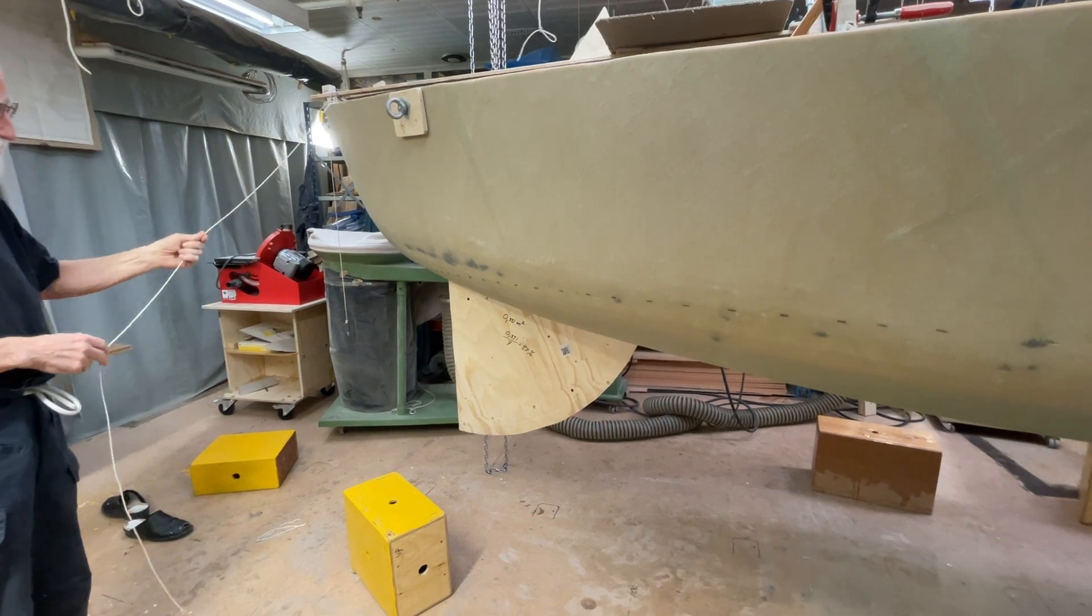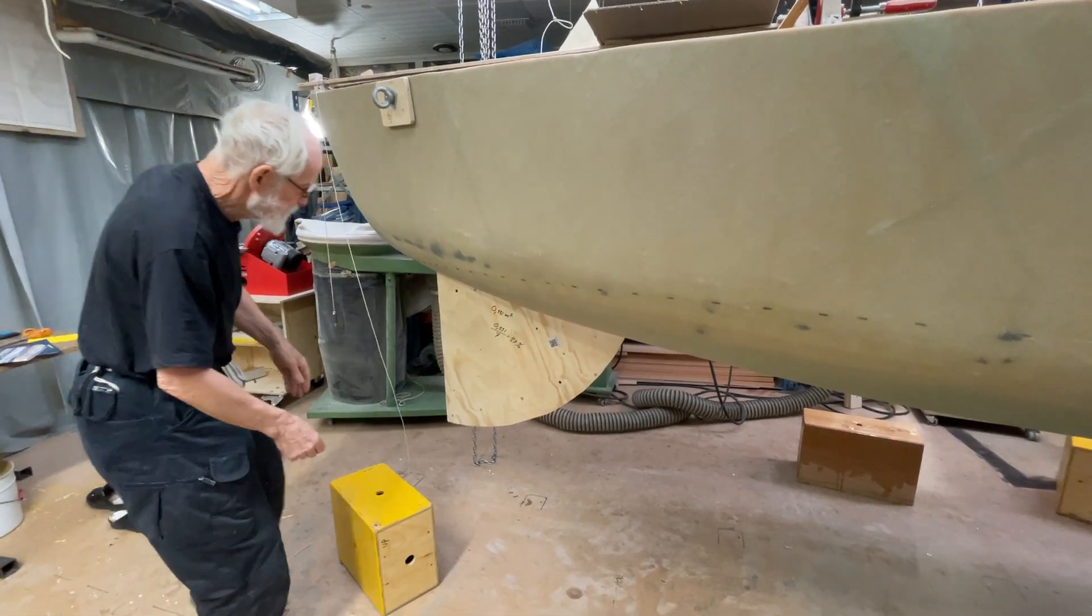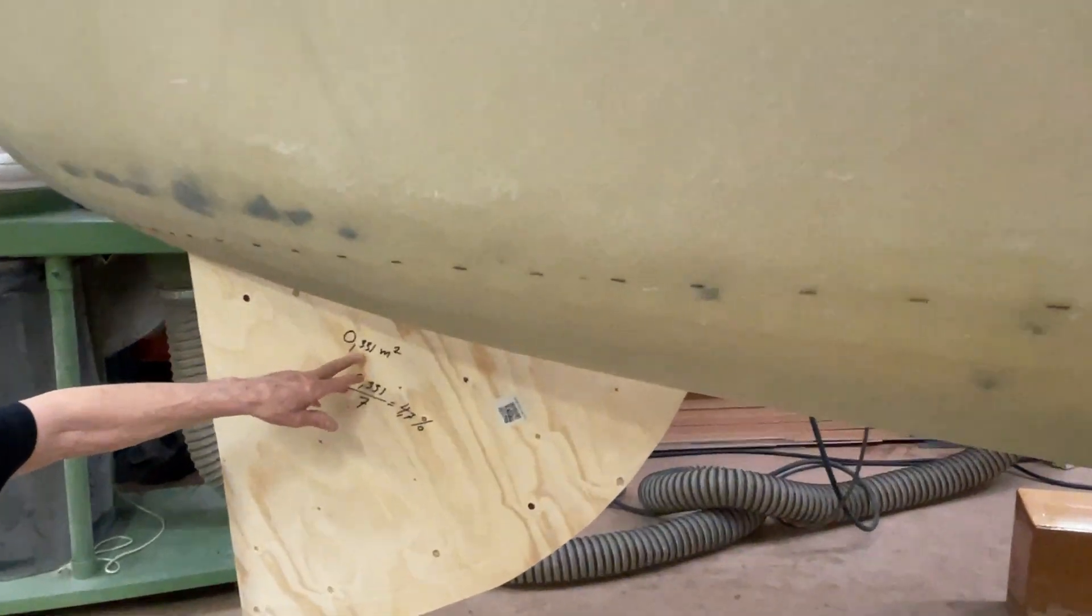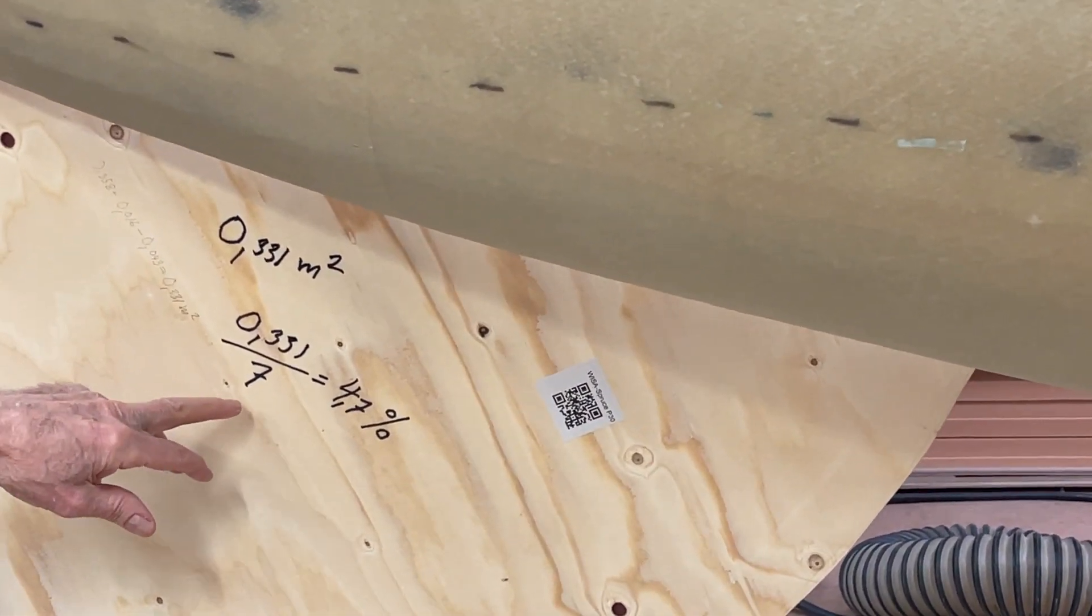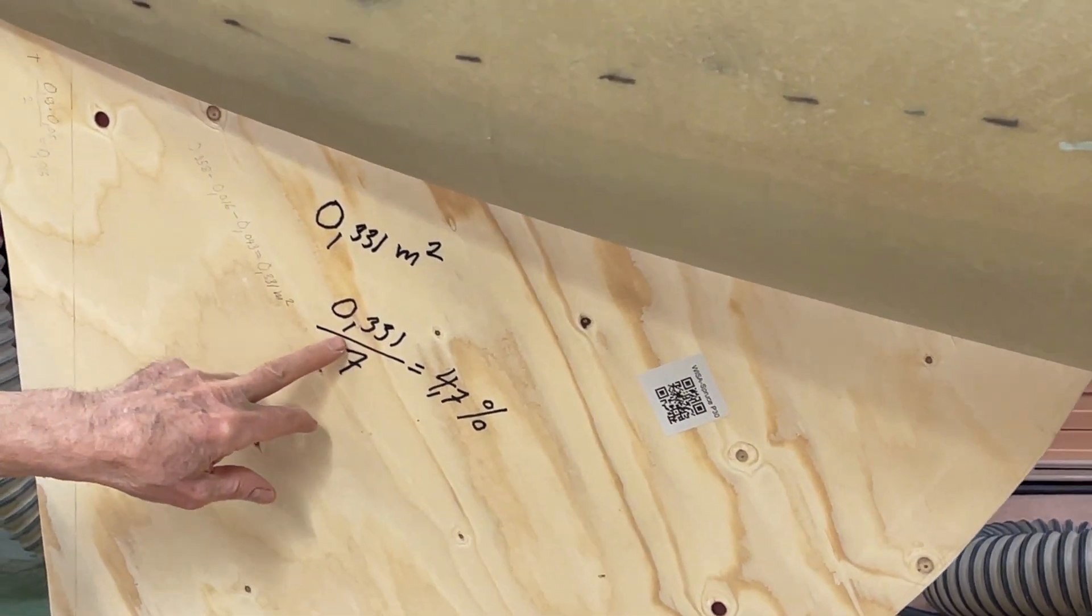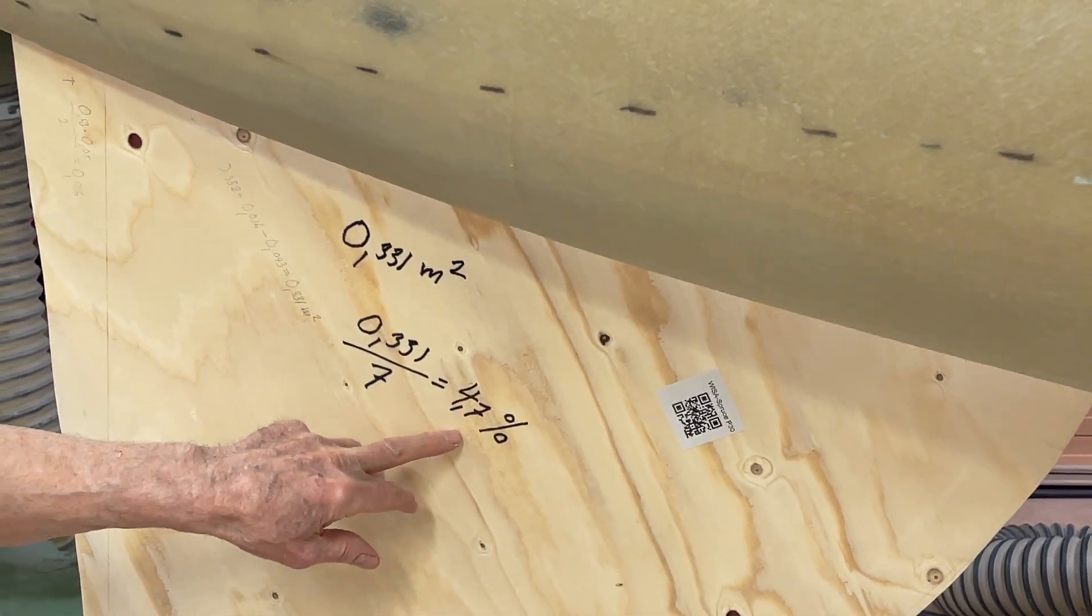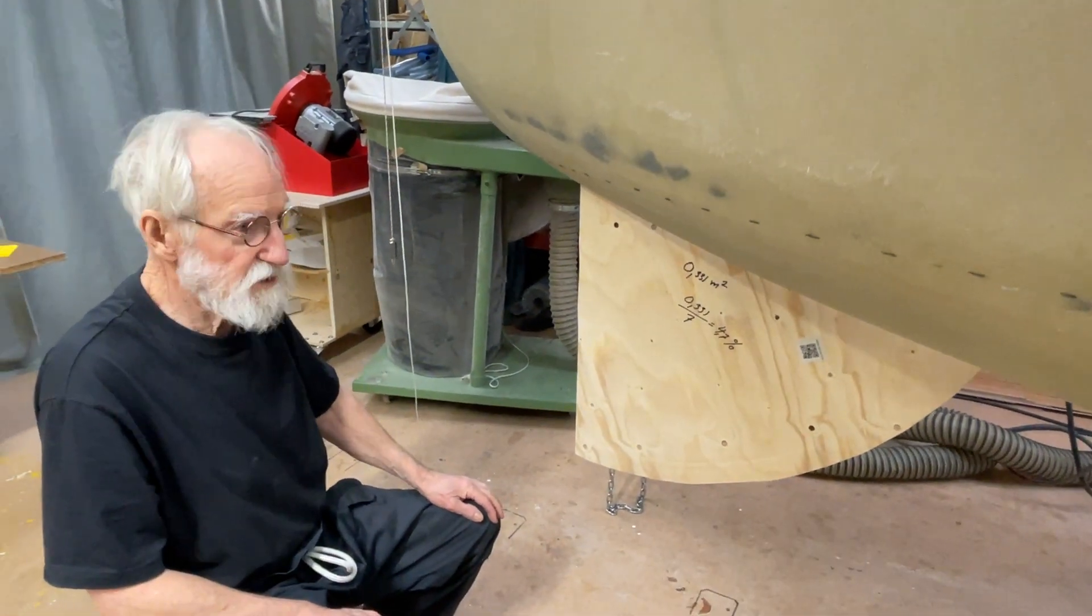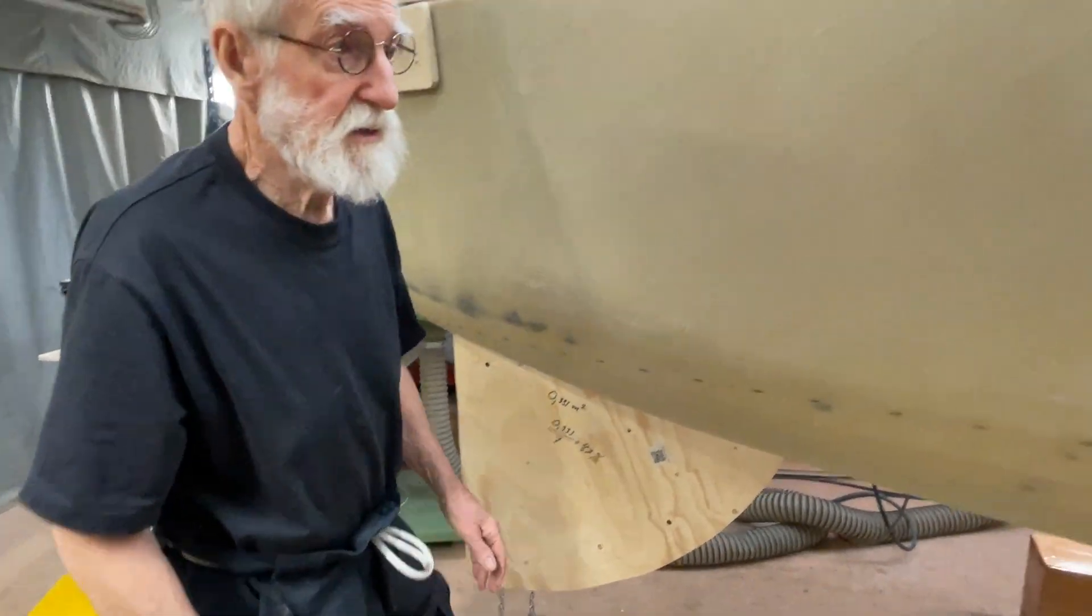So nicely, this is 3.31 square meters and I've got 7 square meter sail area and that means 4.7% and that's sure ample, as a lot. And in the back...